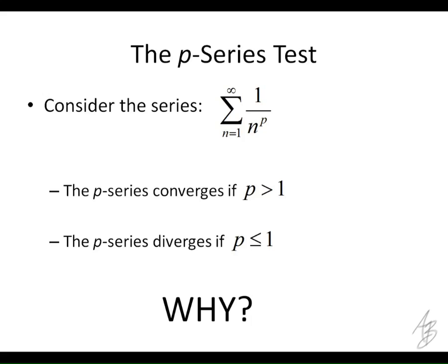We could use the integral test on any P-series. So if we wanted to show that the sum of 1 over n squared converges, we could just take the integral of 1 over x squared from 1 to infinity, and that's going to be a finite number. So we can use the integral test to show that this part is true. Anytime P is greater than 1, it's going to converge. And anytime P is less than or equal to 1, it's going to diverge. So this works because of the integral test.